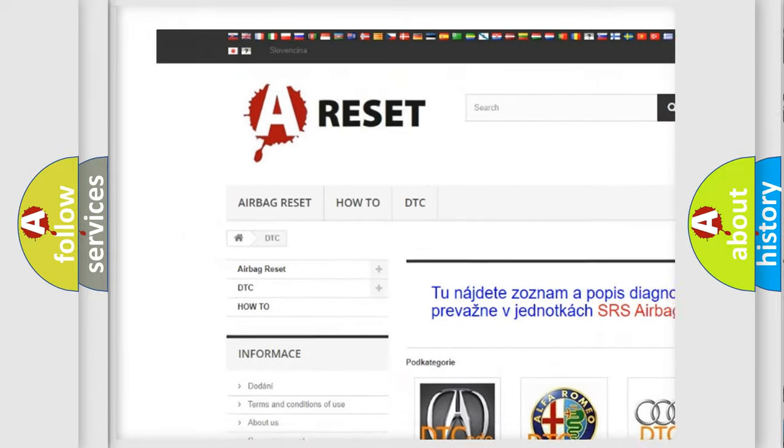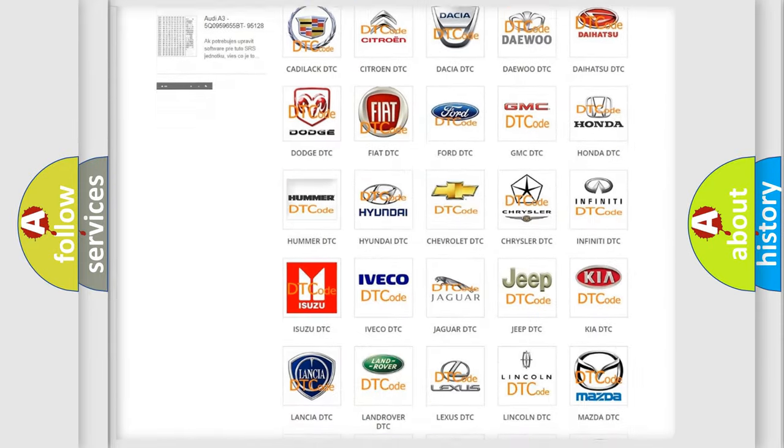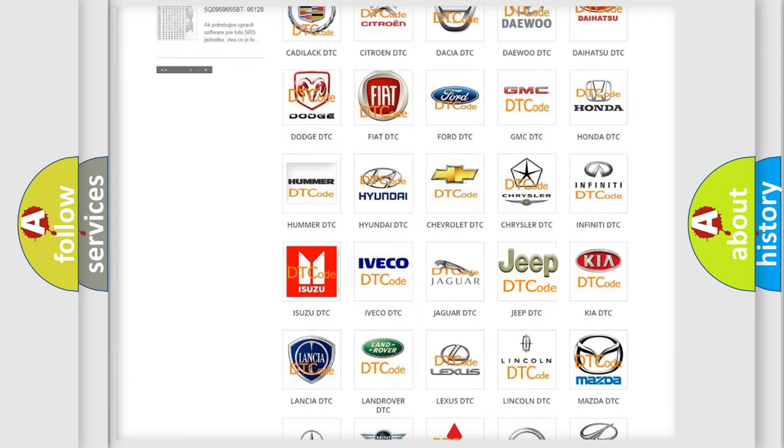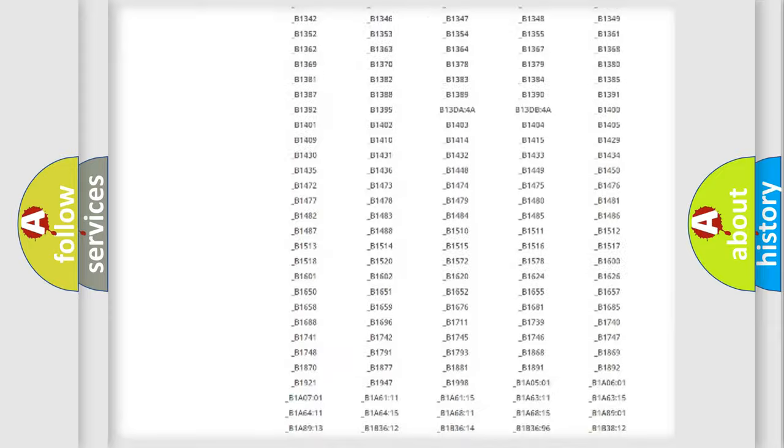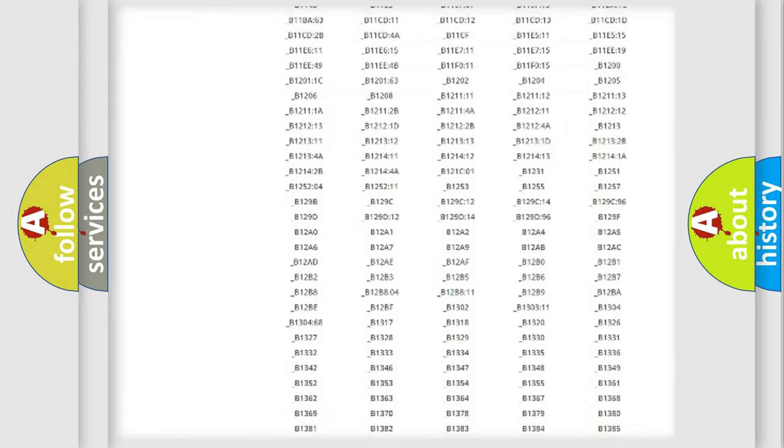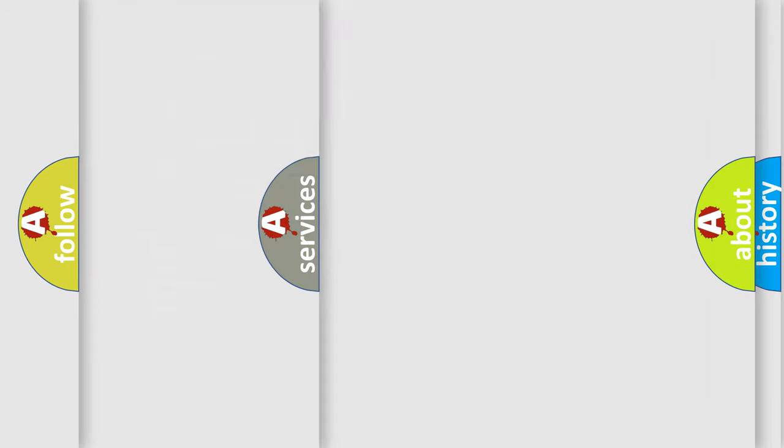Our website airbagreset.sk produces useful videos for you. You do not have to go through the OBD2 protocol anymore to know how to troubleshoot any car breakdown. You will find all the diagnostic codes that can be diagnosed in Jeep vehicles, and also many other useful things.